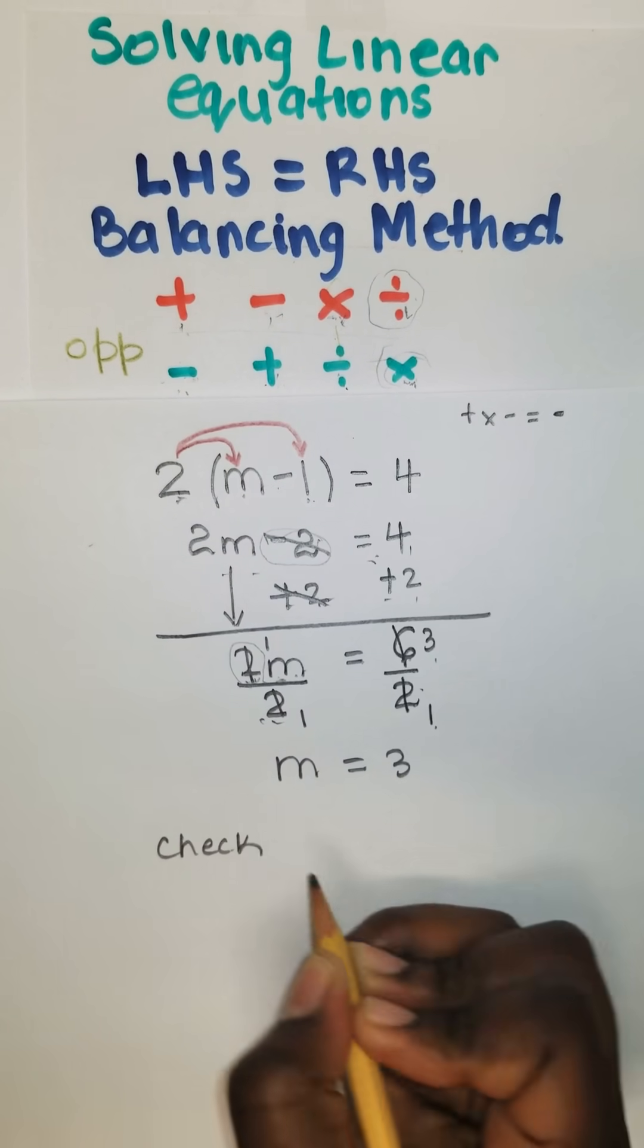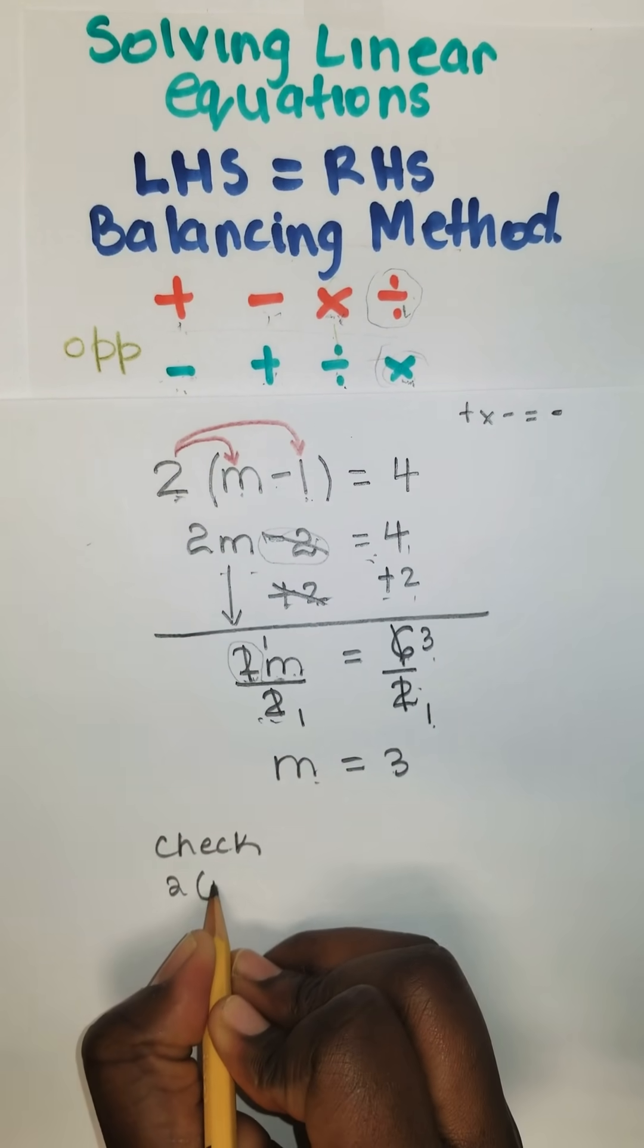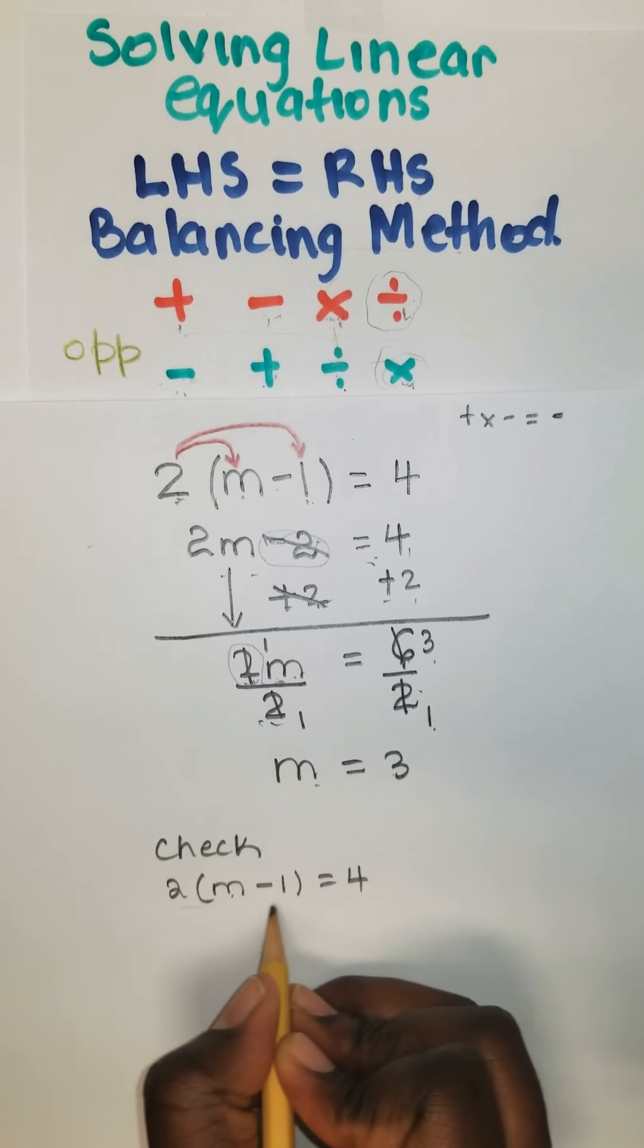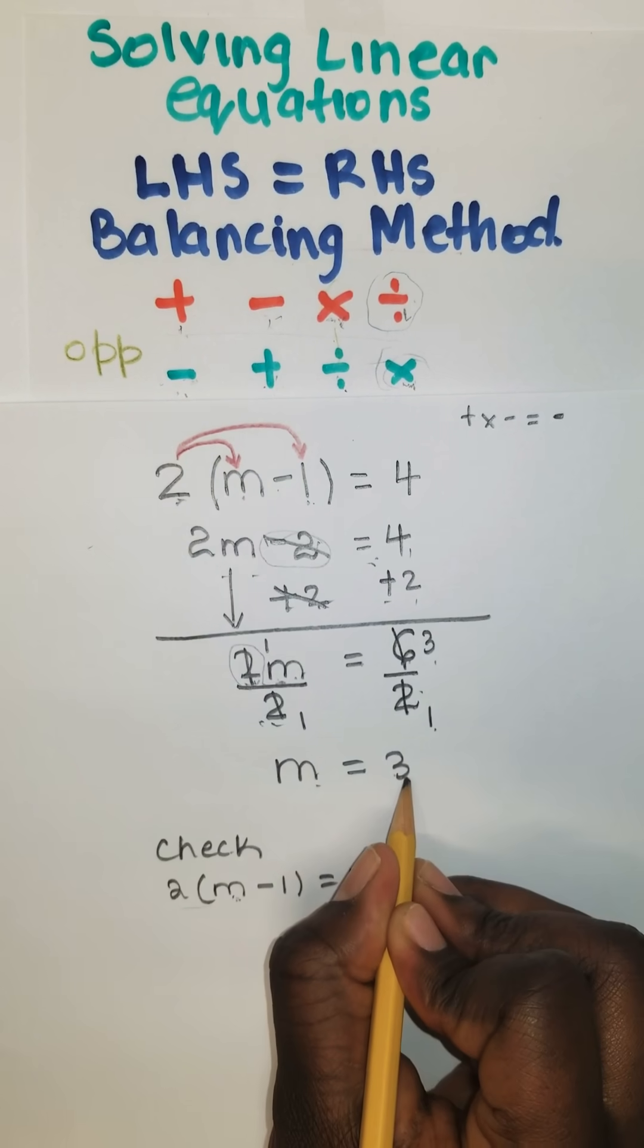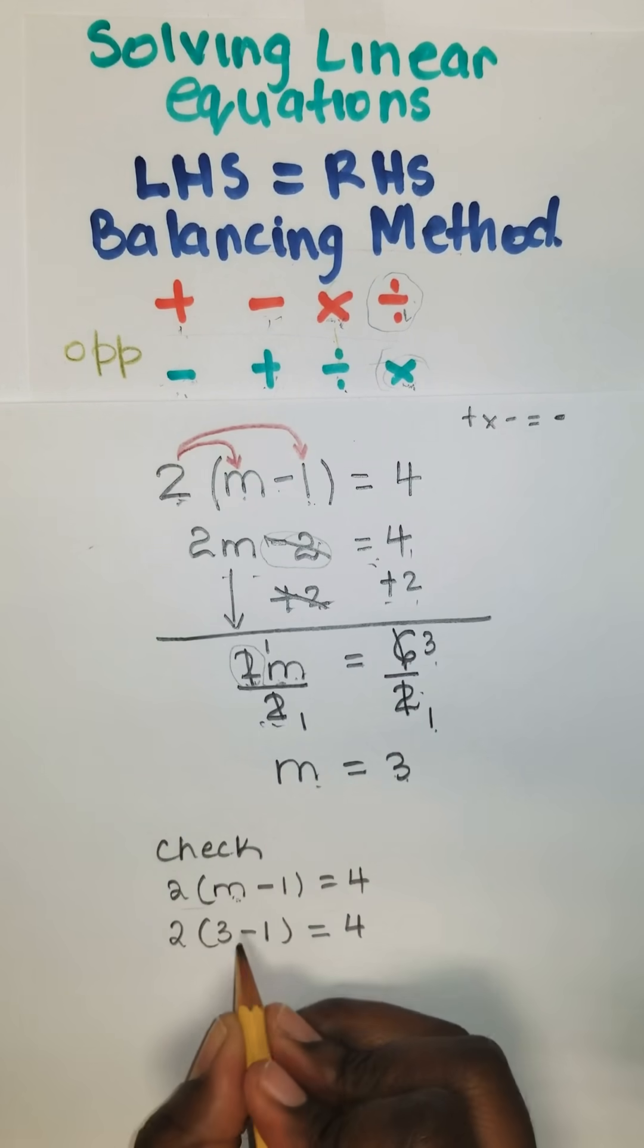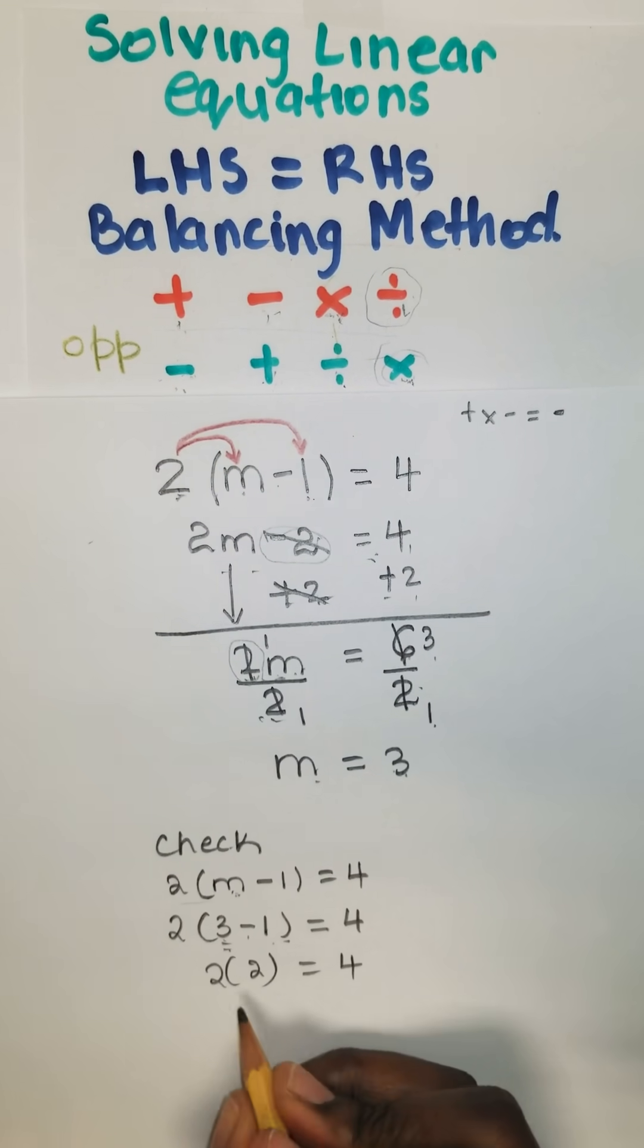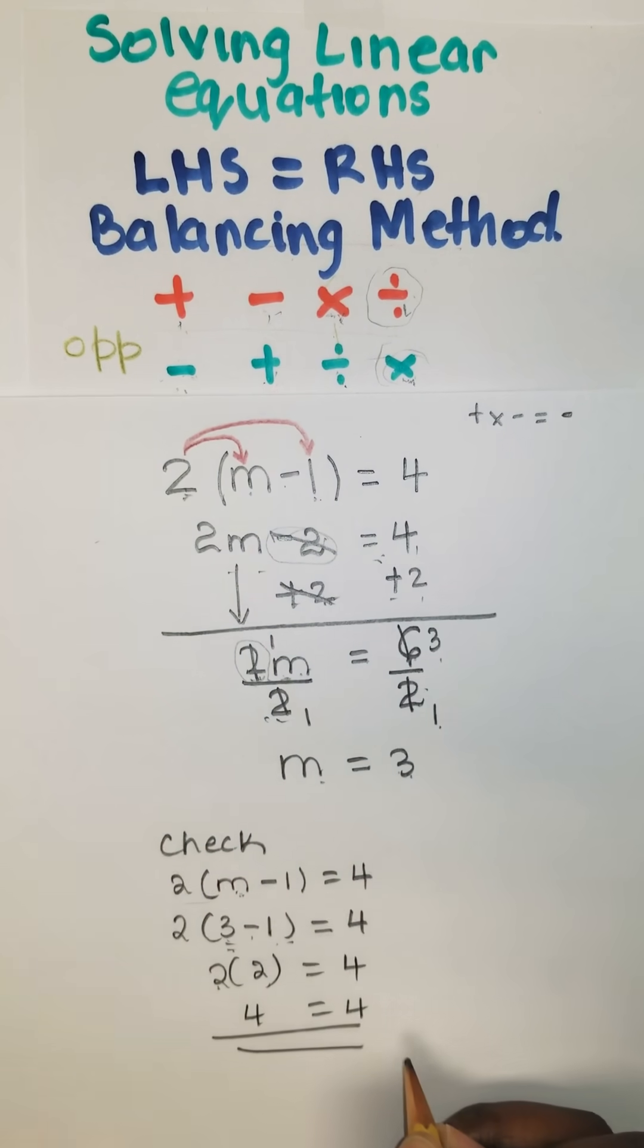Always remember to check. M is 3. We were given 2(m-1) = 4. Anywhere we see m, we put the answer we got. So it's 2(3-1) = 4. We can simplify the bracket by saying 3 subtract 1, which is 2. So it's 2 times 2 is 4. 4 is equal to 4. Again, it's balanced.